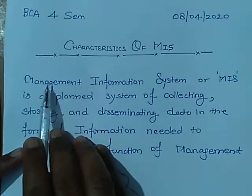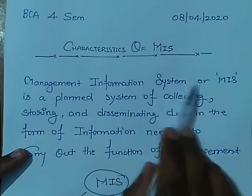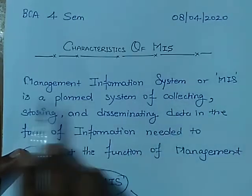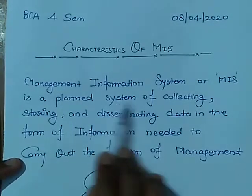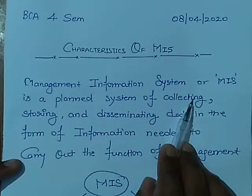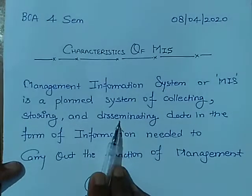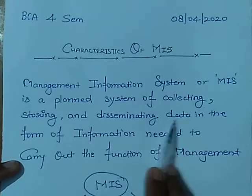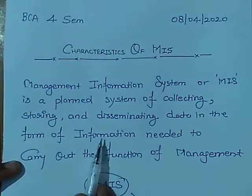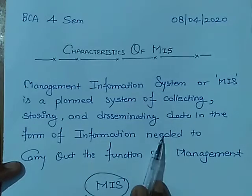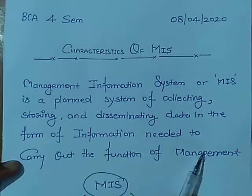Management information system, or MIS, is a planned system of collecting, storing, and disseminating data in the form of information needed to carry out the functions of management.